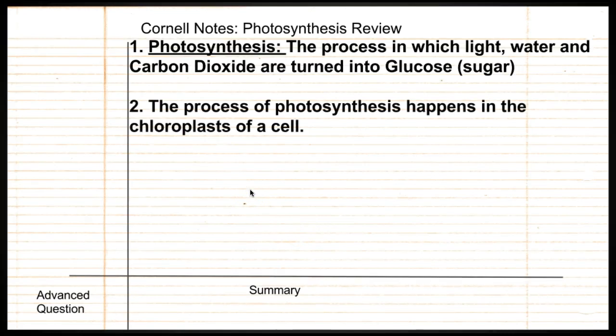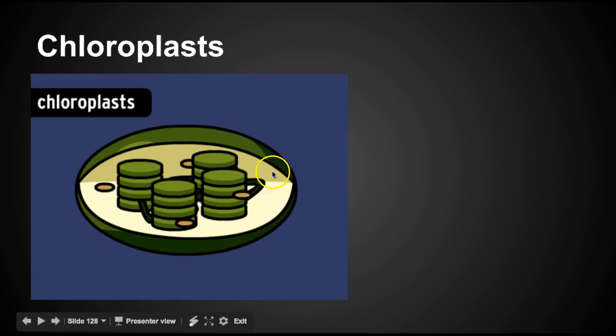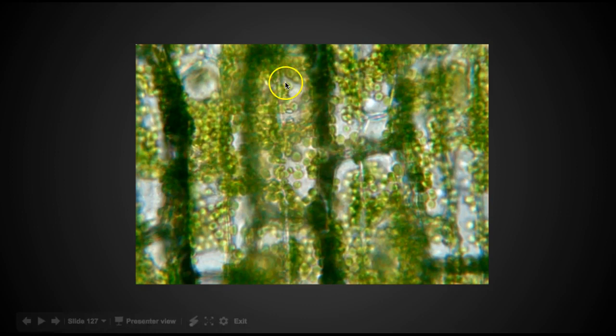Okay, moving on to number two. The process of photosynthesis happens in the chloroplasts of a cell. So here are the chloroplasts. The chloroplasts are little green disks and they help convert the carbon and the water into glucose.